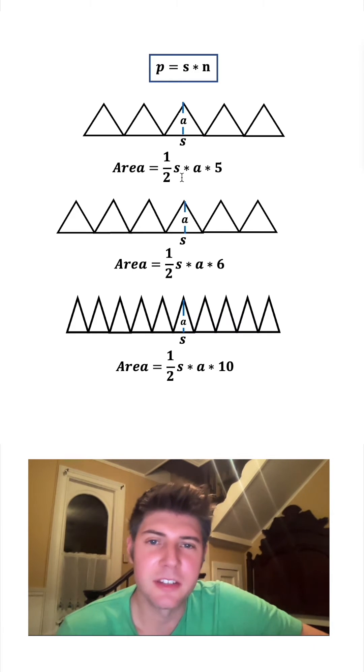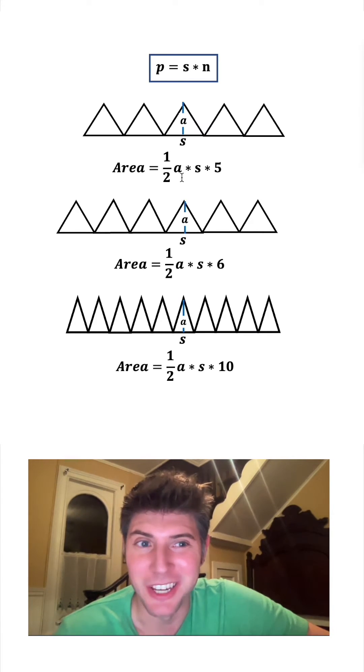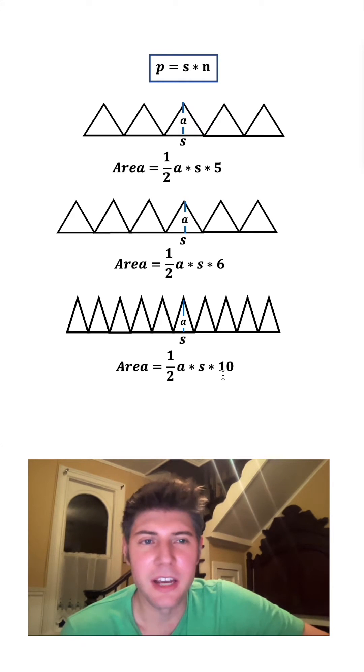If we swap our S and A's, which we're allowed to do by the commutative property of multiplication, and since five or six or ten are a number of sides, let's change that into N. And now we have S times N. And as we pointed out up here, S times N is the perimeter of the original shape. All three of these say area equals one half apothem times perimeter.